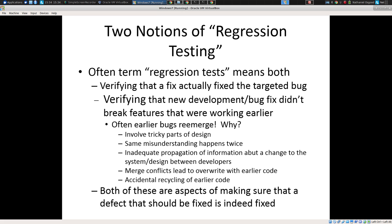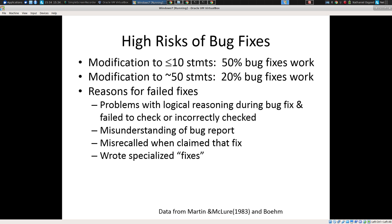There are two uses of the term regression. One has to do with fixes that actually didn't work — you're verifying that a fix actually fixed the targeted bug. This is one reason we automate testing: the test found a problem, you want it automated so you can quickly test whether the problem is fixed rather than having to do it manually step by step. The second meaning of regression is when new development breaks old features that were working before. And often it's earlier bugs coming back, or new development breaking assumptions that caused old features to fail.